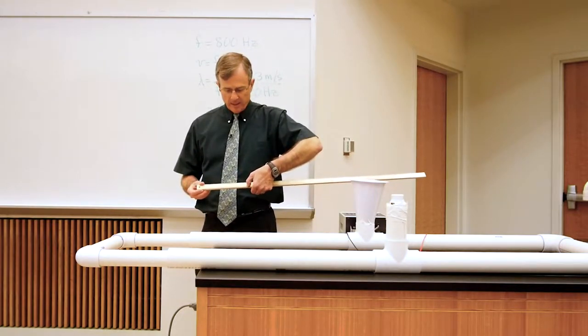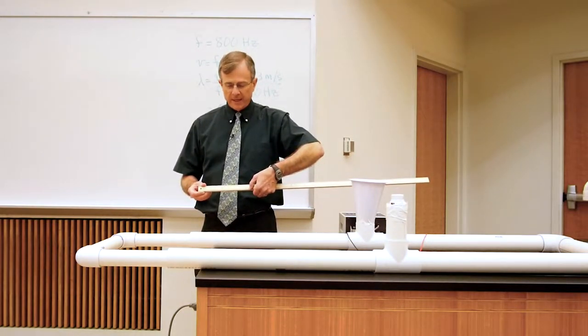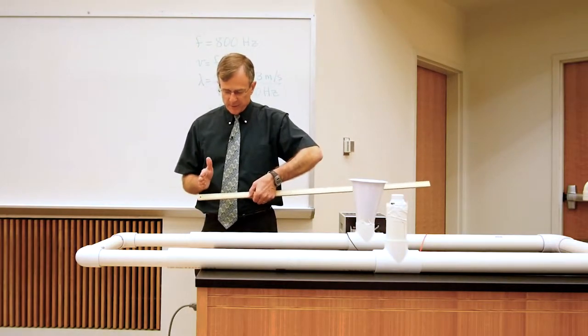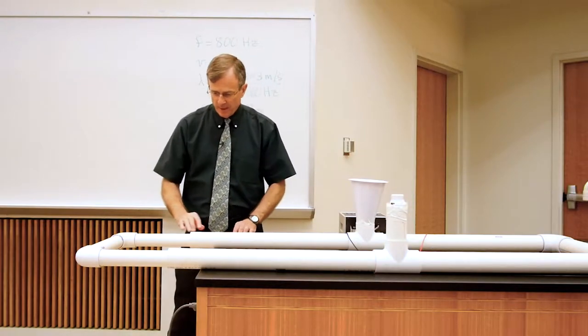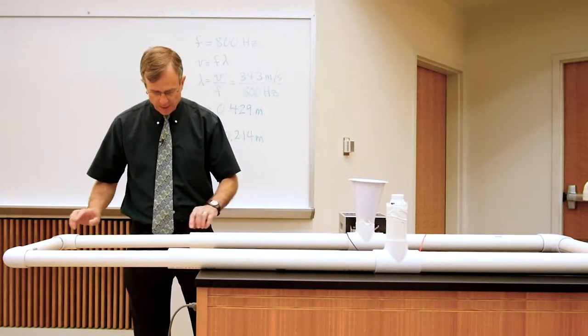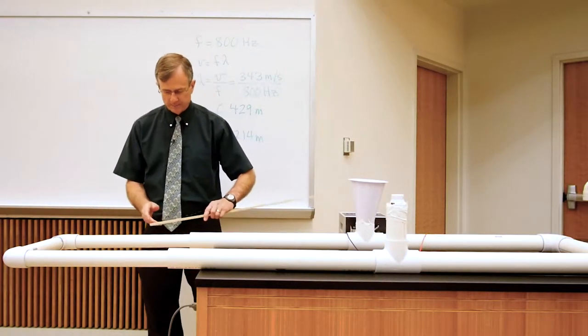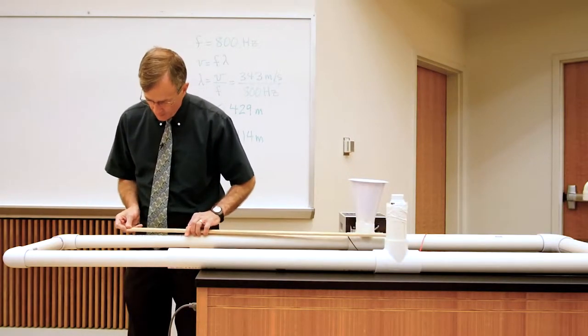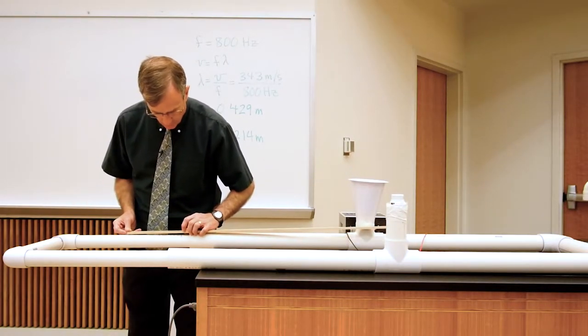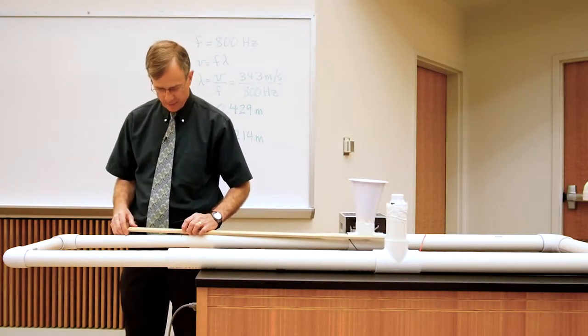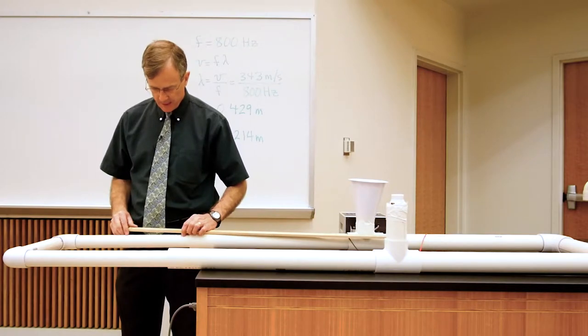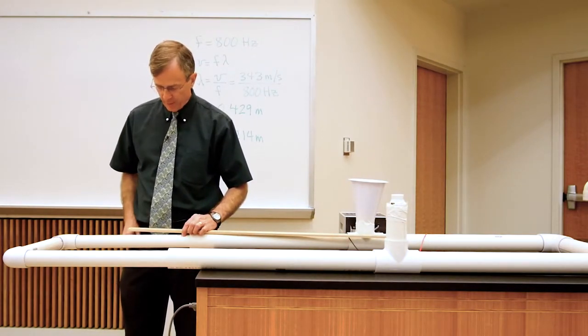then I should move through a complete cycle going through constructive interference, then destructive interference, then constructive interference again. And I've previously marked points on here that are separated by 21.4 centimeters. This blue mark here and this blue mark here are separated by 21.4 centimeters. And here's a point halfway in between.